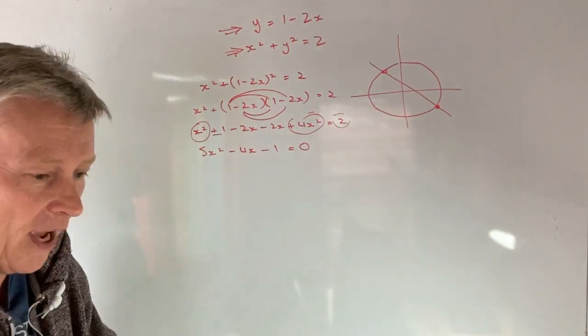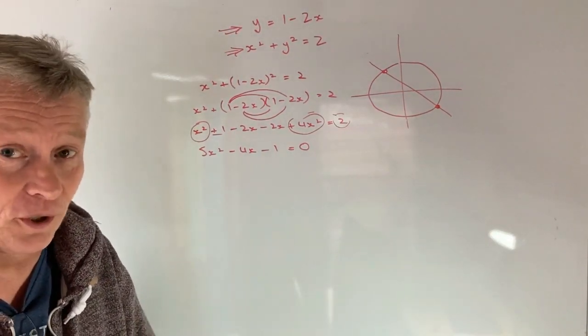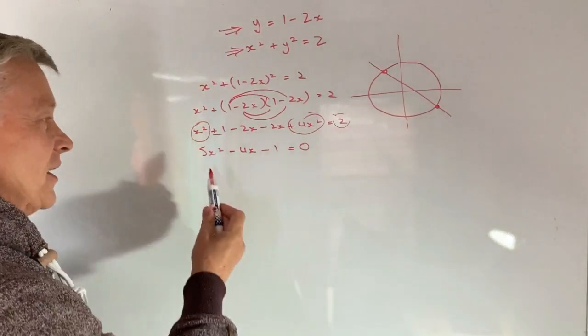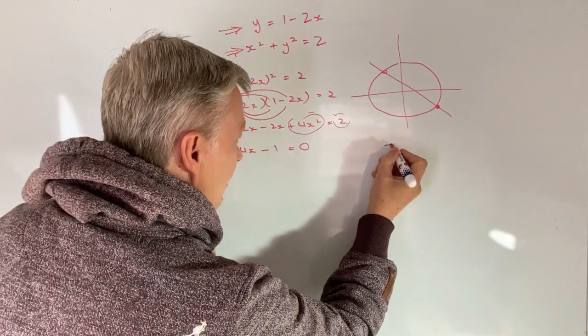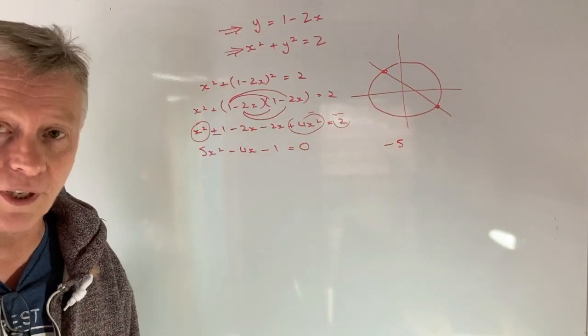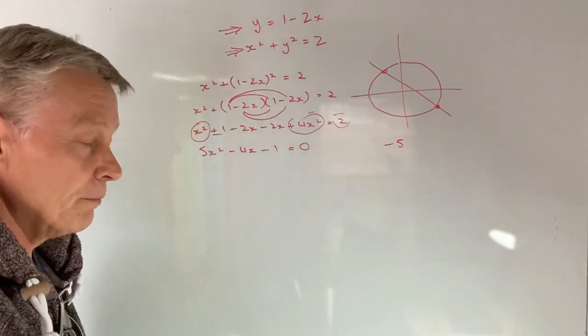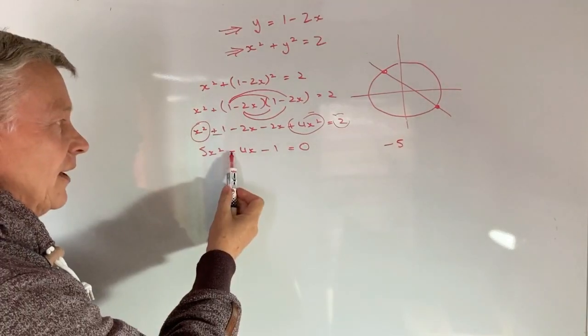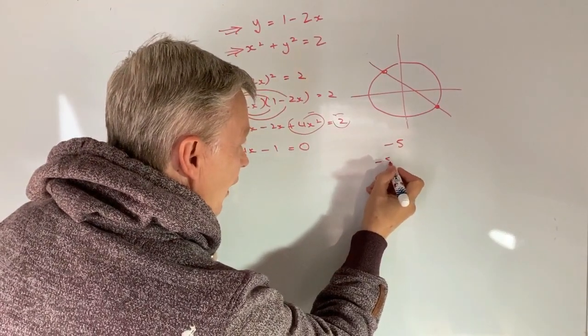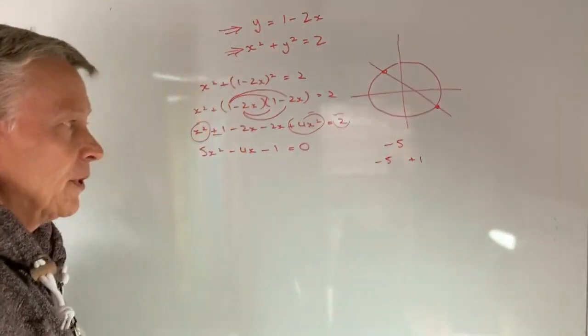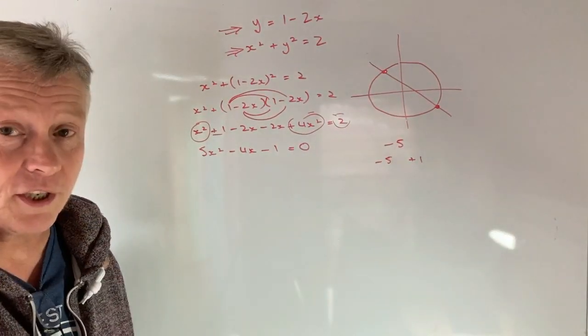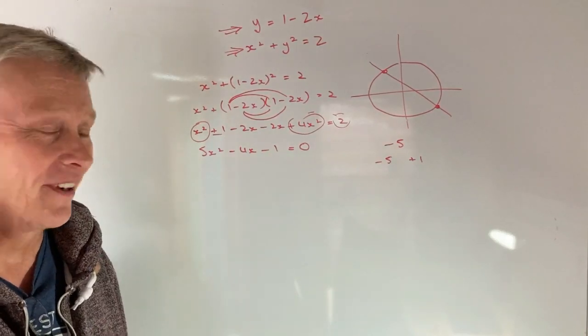Now there's a couple of different methods of doing this. I do it my particular way. I'm sure there are other ways in which your teachers might have shown you. But my particular way is to say, I've got 5 times minus 1 is minus 5. And then I'm looking for two numbers that when I multiply them together, will make minus 5. And when I add them together, will make minus 4. Well, those two numbers are going to be minus 5 and plus 1 because minus 5 times plus 1 is minus 5 and minus 5 plus 1 is minus 4.